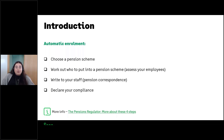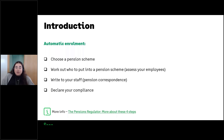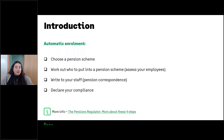Firstly, you're going to choose a pension scheme and get it set up with your chosen pension provider. You and your employees will pay money into this scheme and ultimately it's going to help your staff pay for their retirement. There are loads of options in terms of which pension provider to go with and what type of pension scheme to set up, so that is totally up to you.